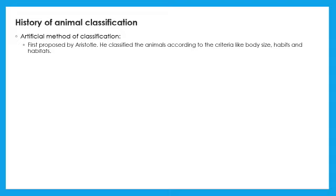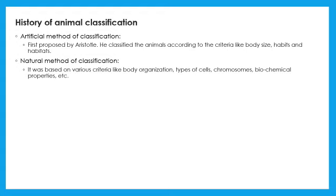Further due to advances in science the references were changed and natural system of classification based on body organization, types of cells, chromosomes was proposed. Later scientists tried the systems based on evolution and three domain system. Let us know how this classification is useful and beneficial.